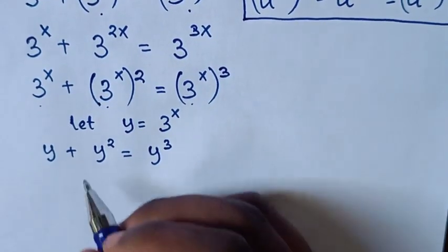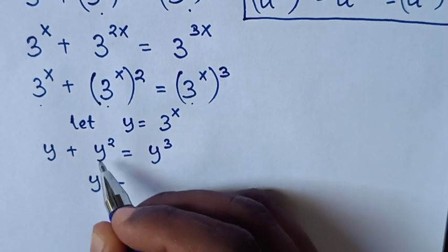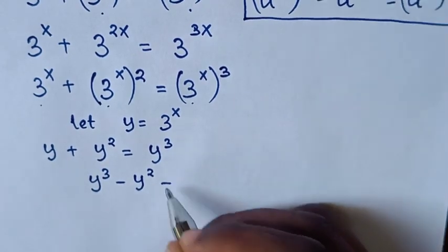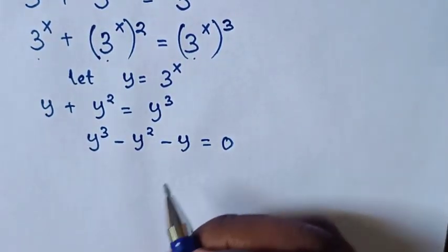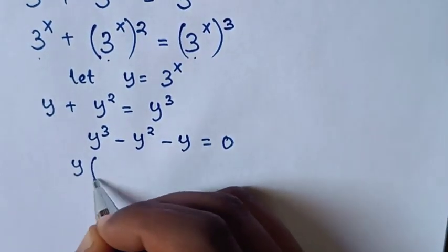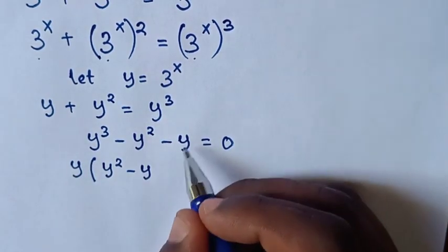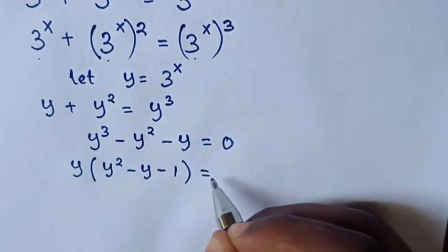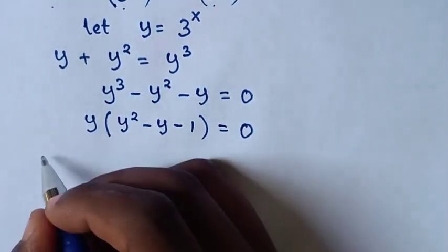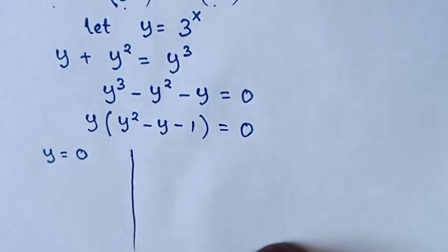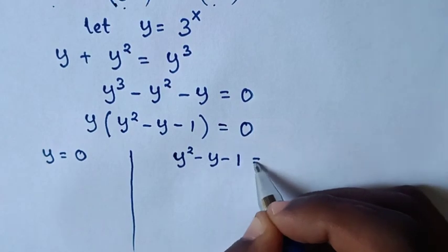Then in the next step, we take y squared and y to the right side, so it will be y cubed minus y squared minus y is equal to 0. Then y is common, so we take y out of the bracket: y times (y squared minus y minus 1) is equal to 0.